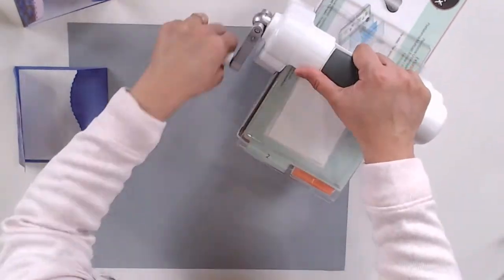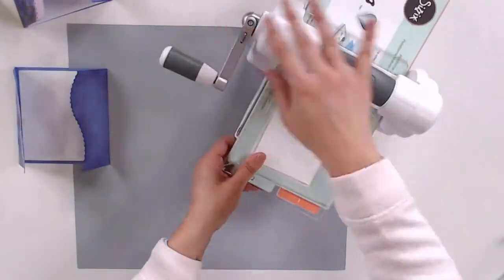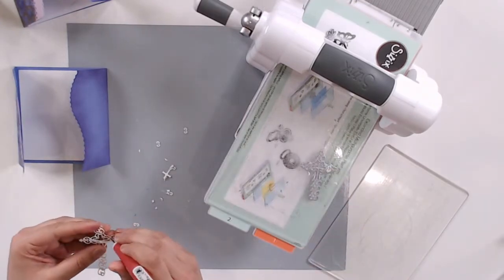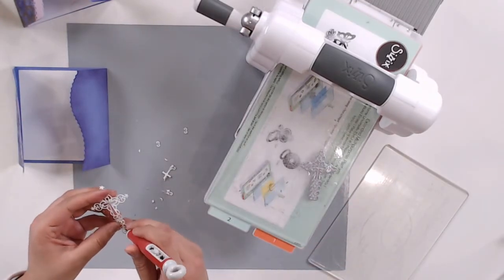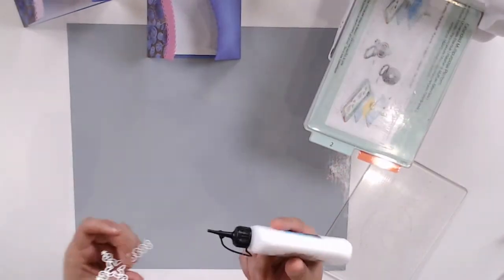Next, I'm die cutting the cross die from white cardstock, and I'm going to glue it on the solid purple panel of my card with some liquid adhesive. This die is really intricate and has a lot of detail. It's absolutely gorgeous, so be very careful when you're using a pokey tool or a die brush.